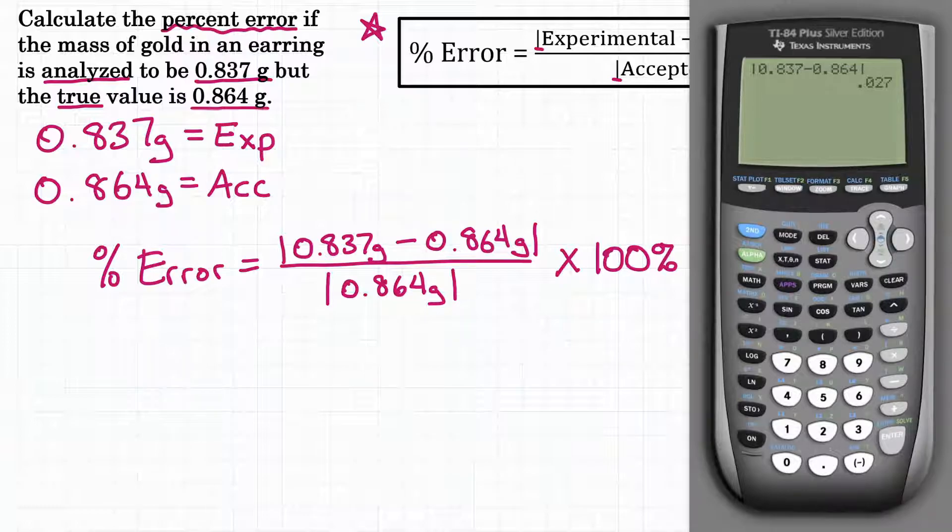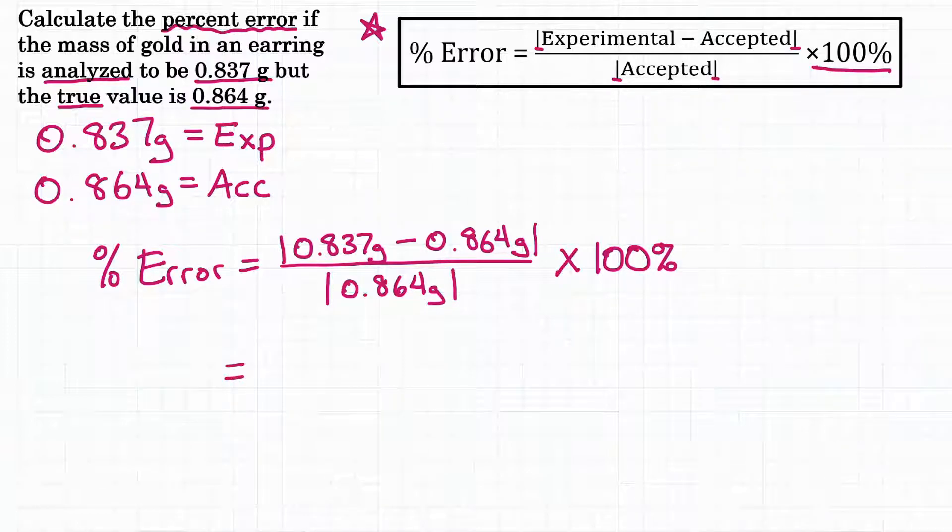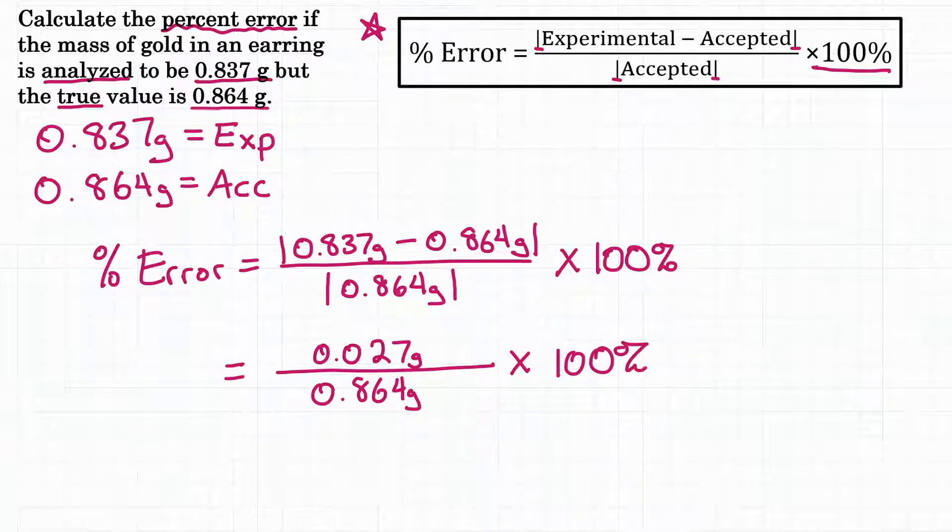So for our problem, we have on top of our fraction, 0.027, and our units were grams for both of those, so our units are still going to be grams. Now the bottom of this fraction has absolute value 0.864 grams. That's already positive, so we can just rewrite it again as 0.864 grams without those absolute value bars. And we're going to multiply that all by 100%.